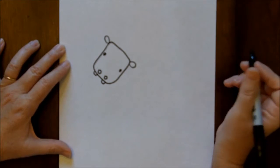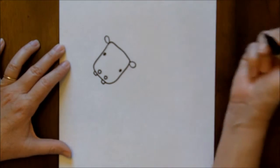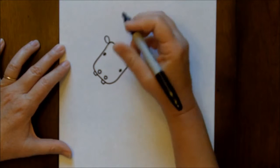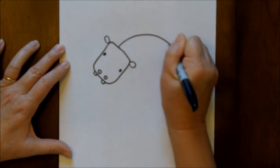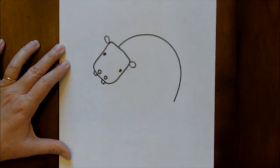Then for his body, we're going to come out basically from the middle of his head, and we're going to make a curved line, just like that. He has a very large body.